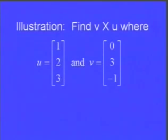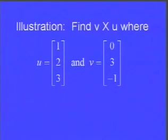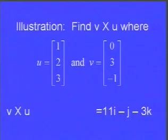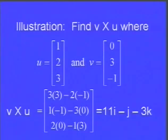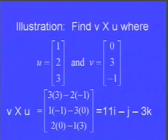Let's illustrate the first property: v cross u should be the negative of u cross v. Since we found u cross v = (−11, 1, 3), we expect v cross u = (11, −1, −3). Plugging into the formula: first entry 3·3 − 2·(−1) = 11, second entry 1·(−1) − 3·0 = −1, third entry 2·0 − 3·(−1) — wait, 2·0 − 3 = −3. Indeed, v cross u is the negative of u cross v.